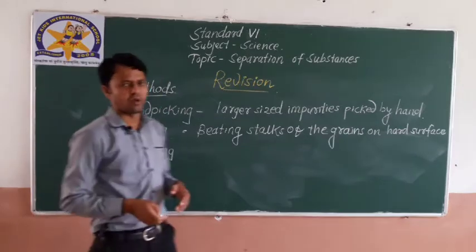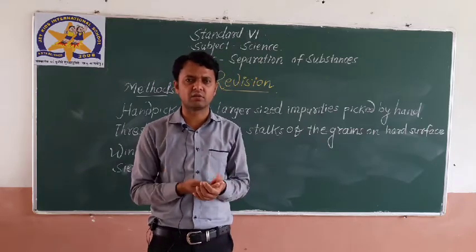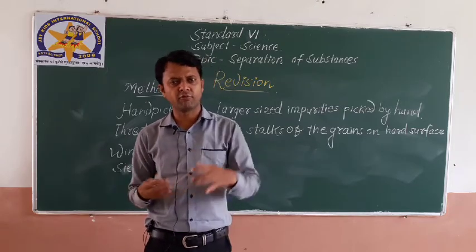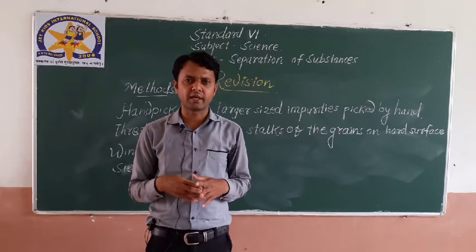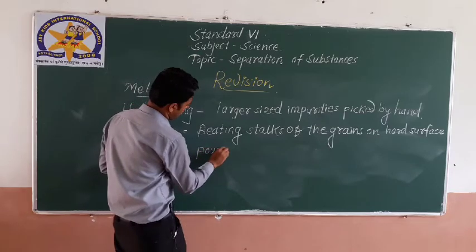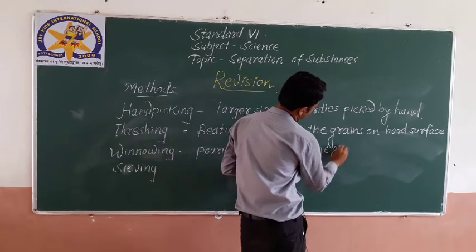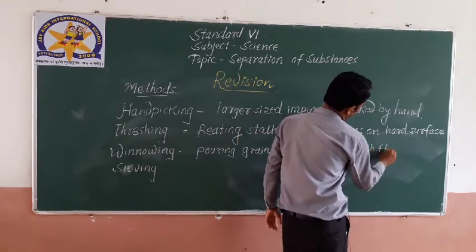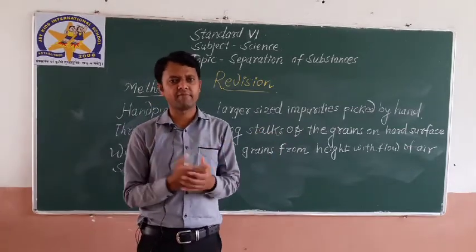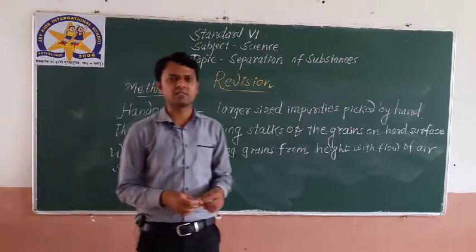Next is winnowing. Winnowing is when a person stands at a height and pours the grains — where grains and stalks are mixed together — from height. With the flow of air, the lighter impurities fly far away from the farmer, and the pure heavier grains are stored nearby. So winnowing means pouring grains from a height with the flow of air so that grains get separated from stalks or smaller impurities.